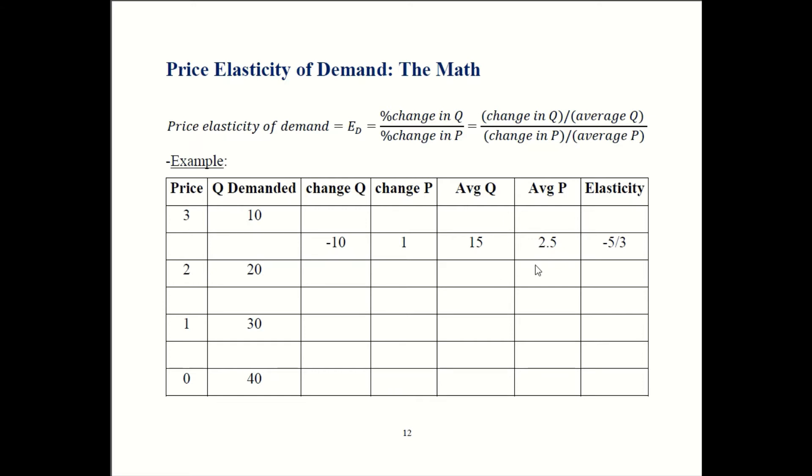So we've got all of our ingredients together. Let's plug them into our formula up here. So change in Q over average Q, that's minus 10 over 15. So that works out to minus two thirds. Change in P over average P, that's one over 2.5. That's going to be two fifths. So we have negative two thirds over two fifths. And that works out to minus five over three. So that's how you get your first elasticity.